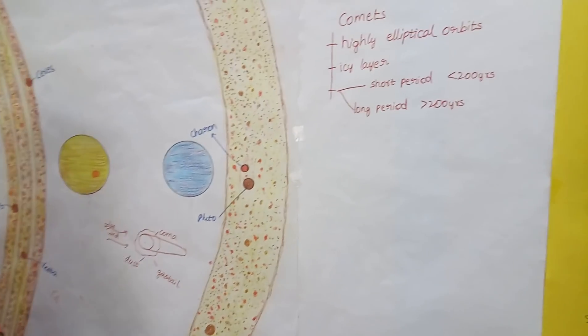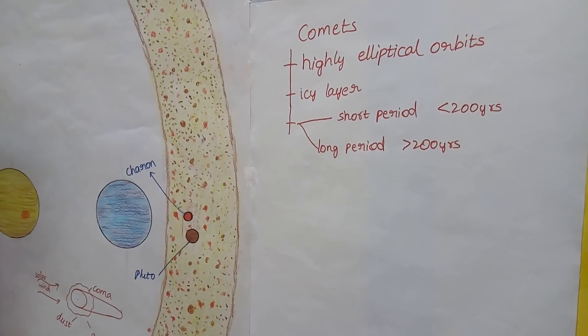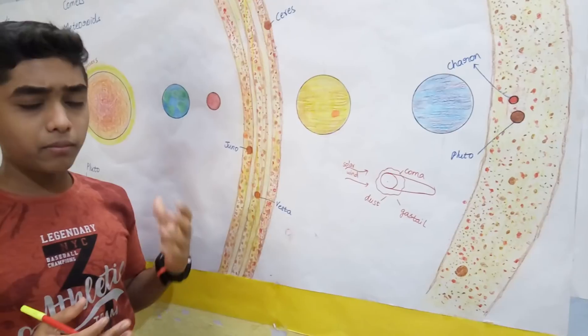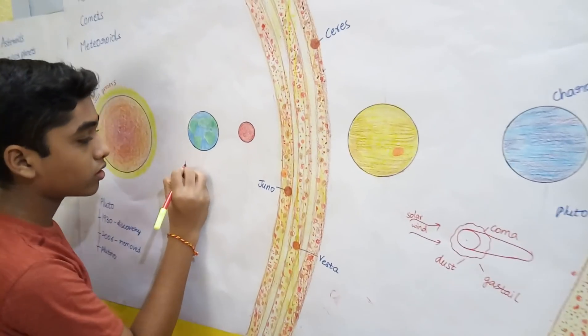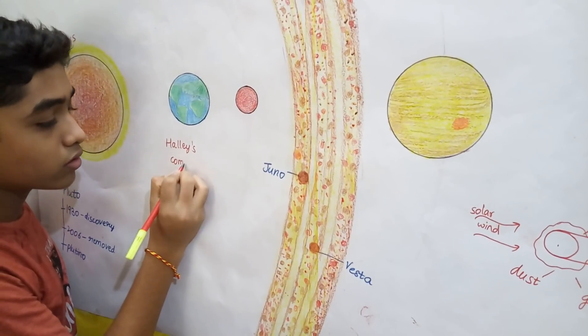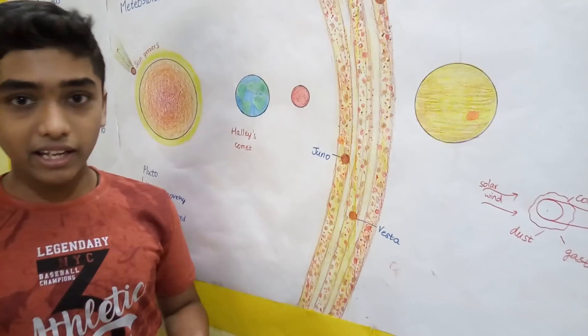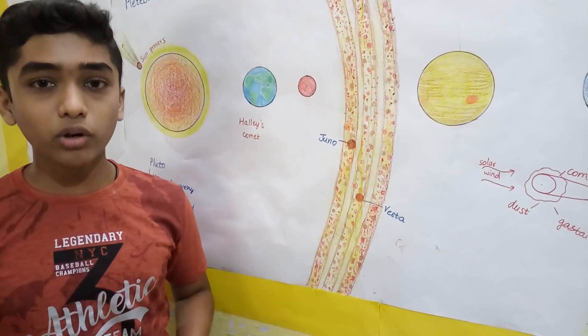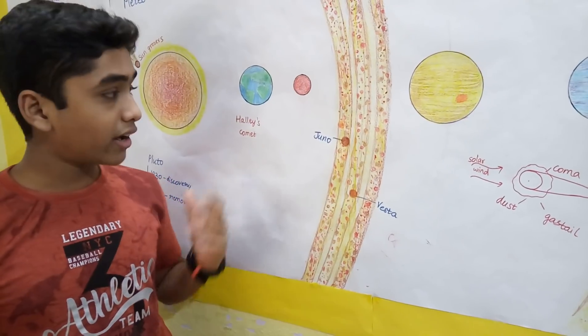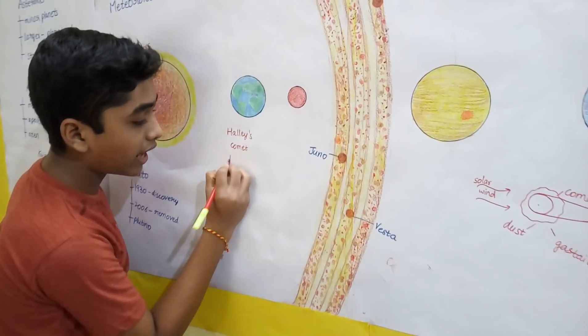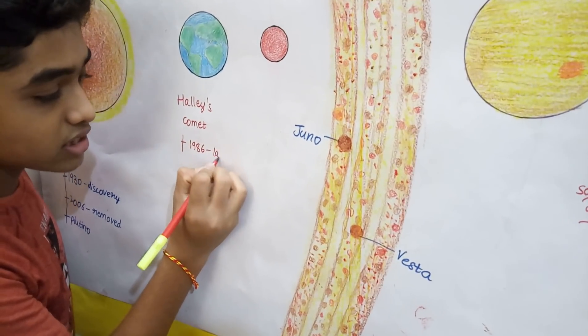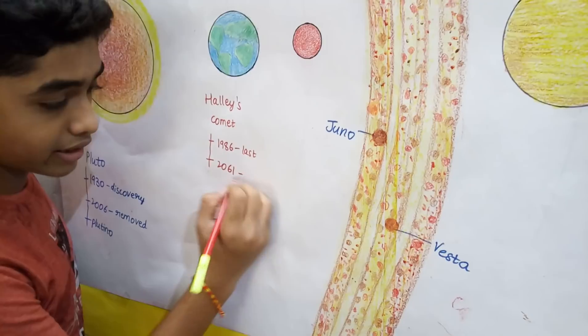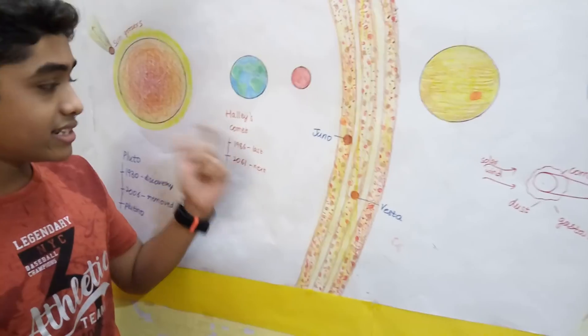One comet which is known to humans from much time is Halley's Comet. It was named after Edmund Haley, a scientist. It was recorded that it was seen by Babylonians, Egyptians, Chinese, Greeks, and all those. It was last seen in 1986, and it is predicted to be seen again in 2061.